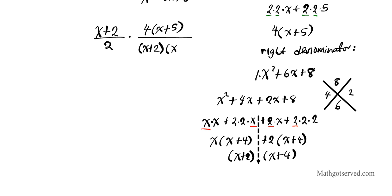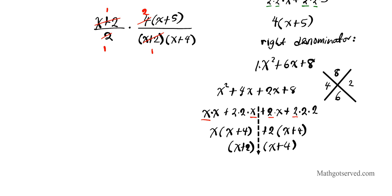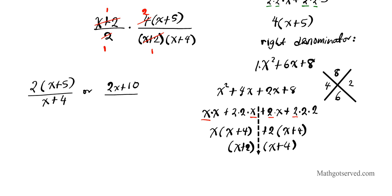Now the full expression is (x plus 2)/2 times 4(x plus 5) over (x plus 2)(x plus 4). We can cancel: (x plus 2) cancels once in the numerator and once in the denominator, and the 2 in the denominator cancels with the 4 to leave 2. So the final answer is 2(x plus 5) over (x plus 4), which can also be written as (2x plus 10) over (x plus 4).